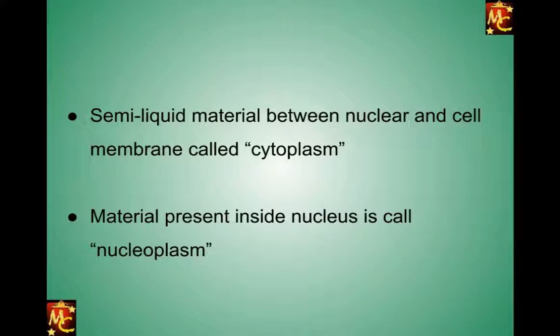Protoplasm may not be categorized in subcellular or intracellular organelles — it's a semi-liquid material inside the cells, between the nucleus and the cell membrane. The material which exists between the nucleus and cell membrane is called cytoplasm, and the material present inside the nucleus is called nucleoplasm. So we can categorize protoplasm in two parts.